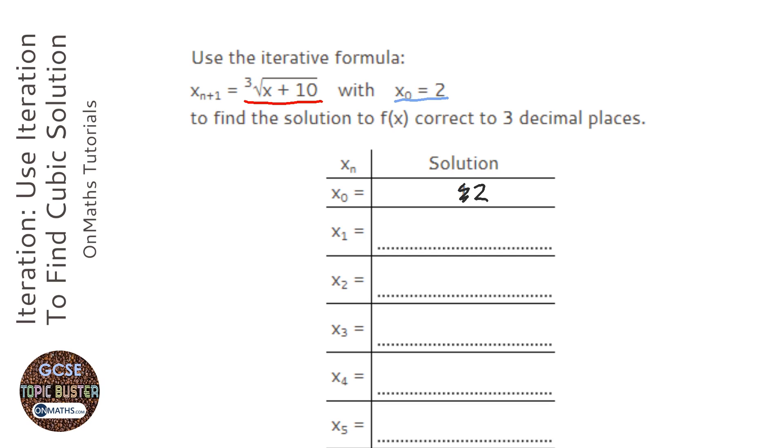The iterative formula either gets closer and closer to a solution, or further away from it. The ones you'll be given will be getting closer to a solution. Every time you run the iterative formula, it gets you a closer answer. It will never get exactly the same answer, but because it's getting closer and closer,